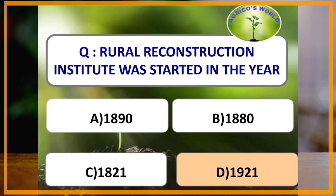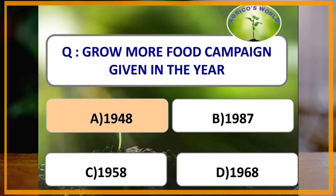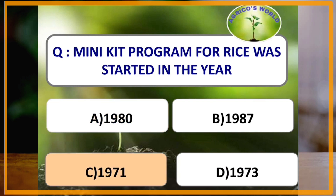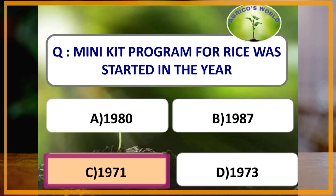Rural Reconstruction Institute was started in which of the following years? Rural Reconstruction Institute was started in the year 1921. Grow More Food Campaign was given in the year 1948. Minikit Program for Rice was started in which year? It was started in the year 1971 by the recommendation of Mohan Singh Mehta Committee.